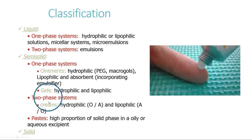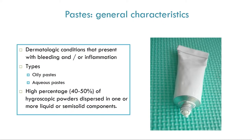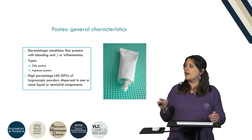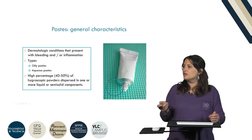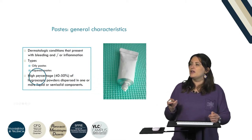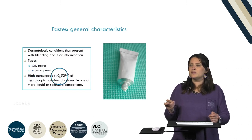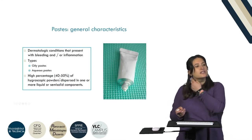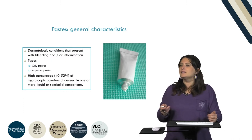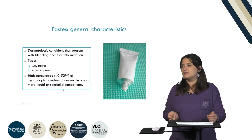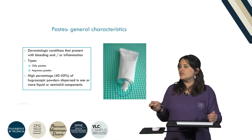In the paste group, as highlighted before, these are systems that contain a solid phase in high proportion, either in an oily or aqueous excipient. They are normally used to treat dermatologic conditions that present inflammation with or without bleeding. There are two types of paste — oily or aqueous — and the percentage of solid dispersed in the system is about 40 to 50%, making them highly hygroscopic semi-solid formulations dispersed in one or more liquid excipients.